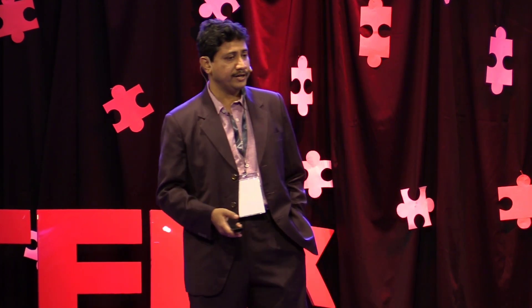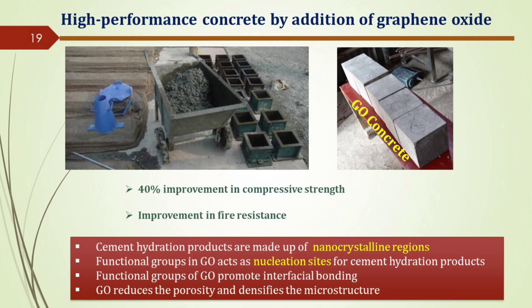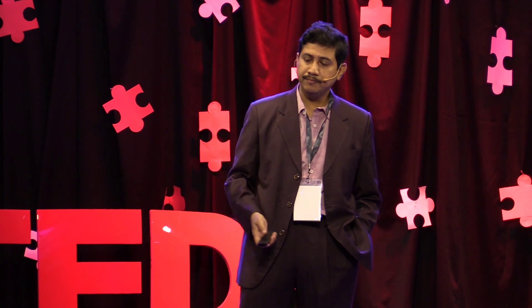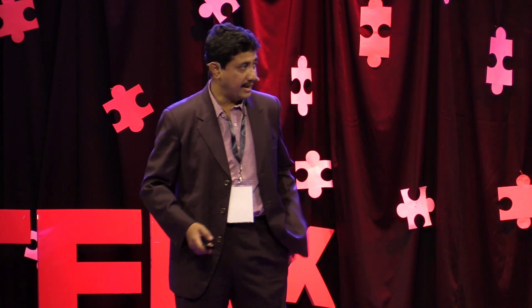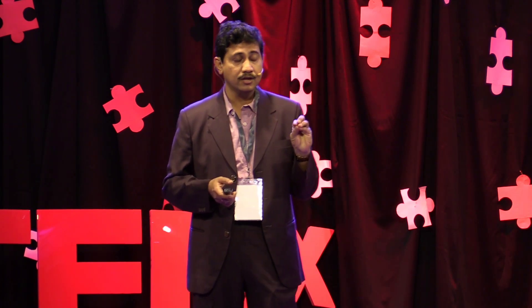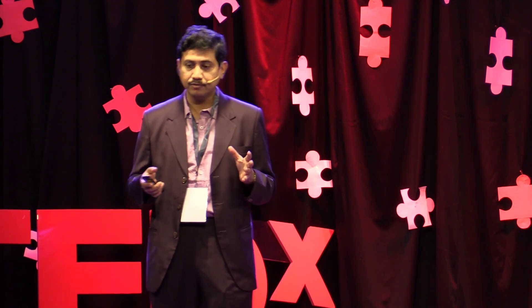Another important application is simple concrete. We could improve the compressive strength of concrete by almost 40% by adding graphene oxide. It also improves fire resistance. The mechanism involves creating nanocrystalline regions where nucleation of hydration products occurs, improving density.